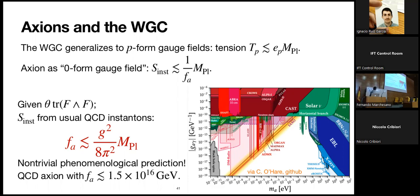Axions seem to behave like gauge fields in many ways. Already in the original WGC paper, it was suggested we should think of axions as zero-form gauge fields. The objects that carry charge are the instantons — they have zero-dimensional worldvolume, they're point-like in spacetime — and the analog of the coupling constant e is one over the axion decay constant f. The generalized WGC applied to axions tells us there should be some instanton whose action is smaller than the Planck mass divided by the decay constant.